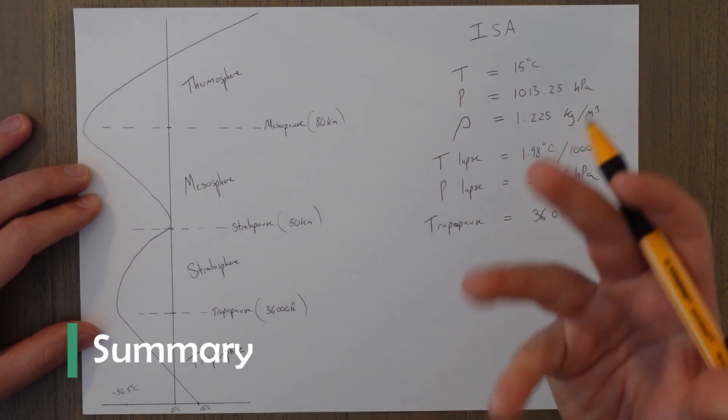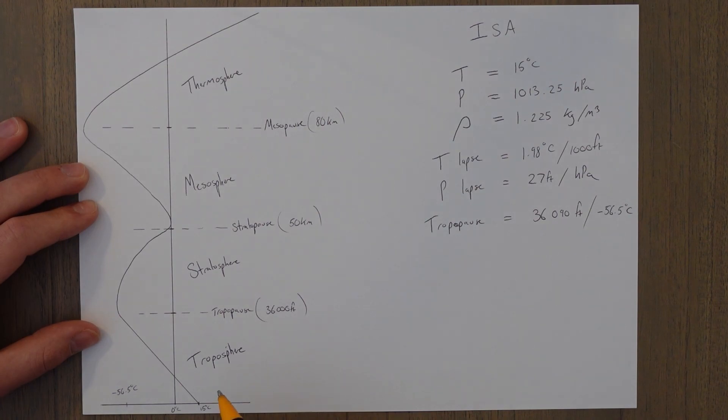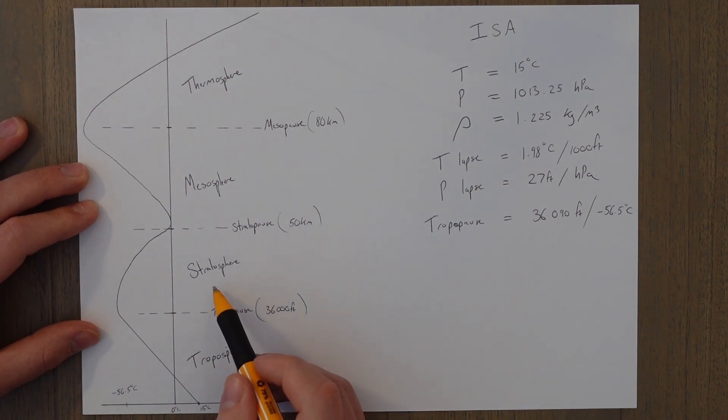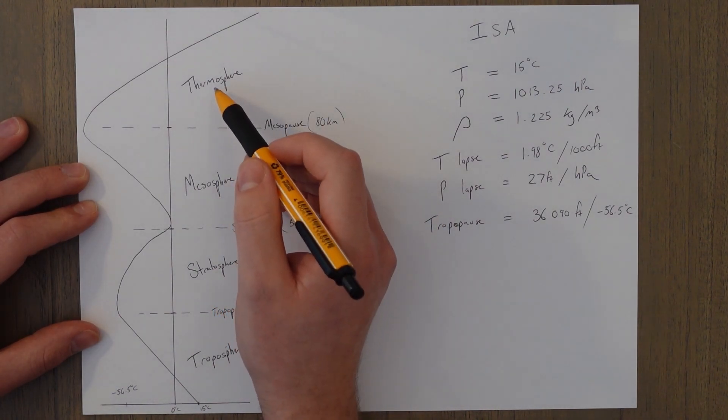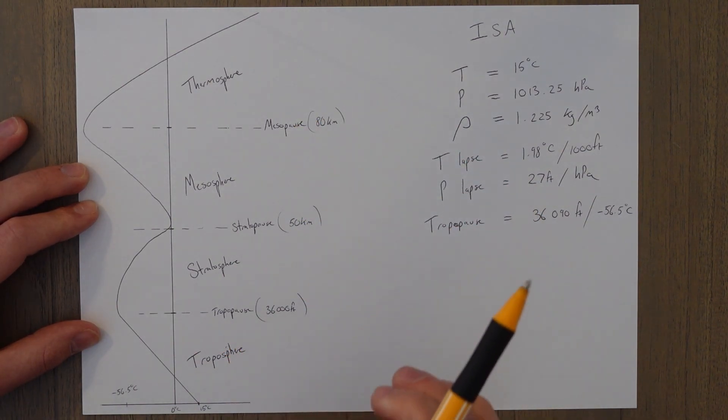So there you go, a very short class. We're just going to summarize: we've got a few layers of the atmosphere—the troposphere, stratosphere, the mesosphere, and the thermosphere—all separated by the relevant pauses: tropopause, stratopause, and mesopause.